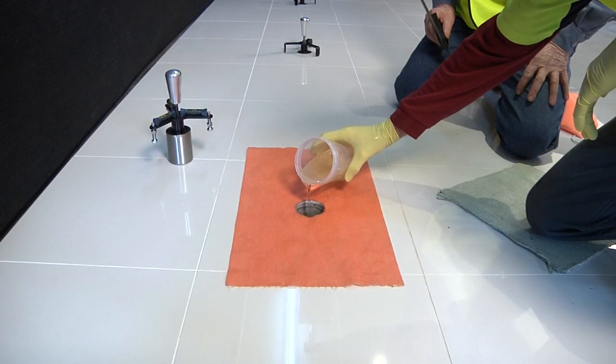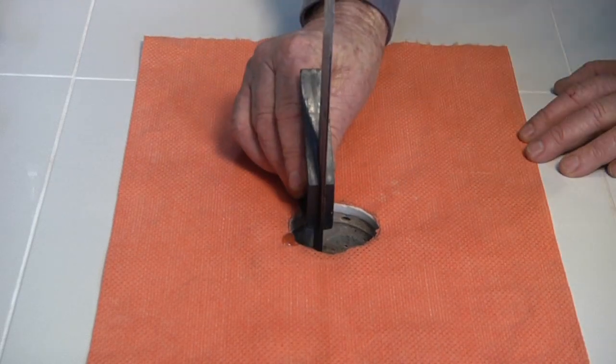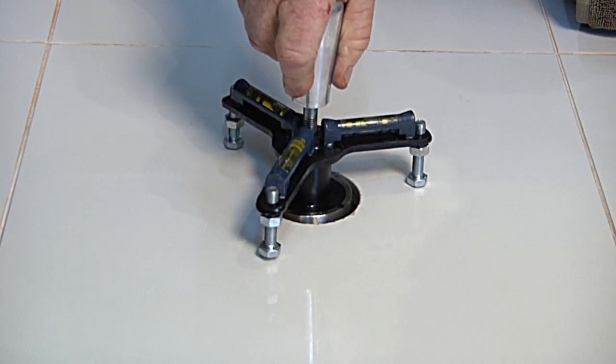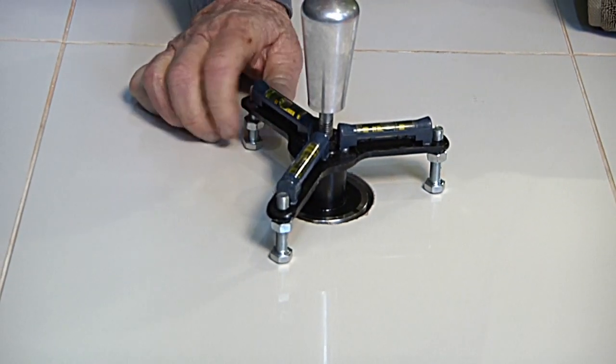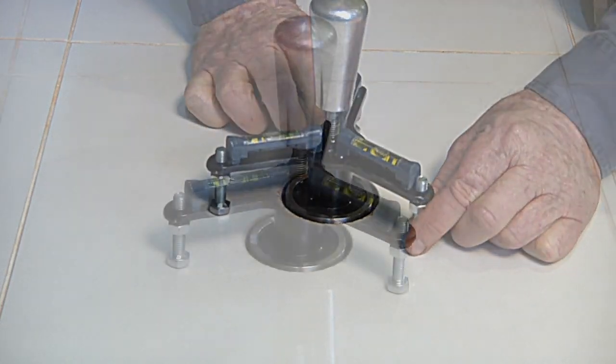The socket void is part filled to a predetermined level with high strength epoxy resin. The anchor socket attached to its locating spider is then gently pushed into the epoxy and checked for plum, surface level and centrality.